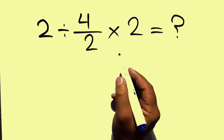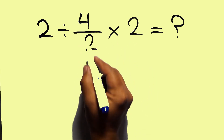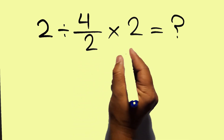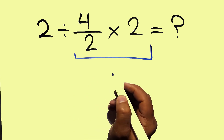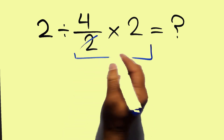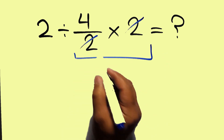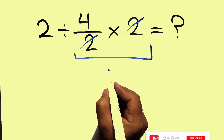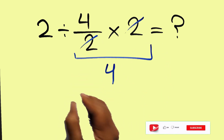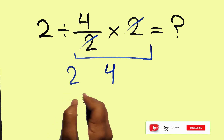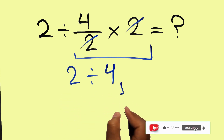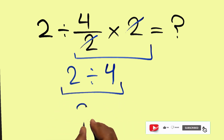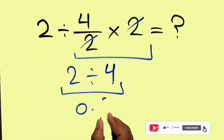First, we do this multiplication: 4 over 2 times 2. We can easily cancel these 2 and these 2, so we have just 4. And 2 divided by 4, which equals 0.5.